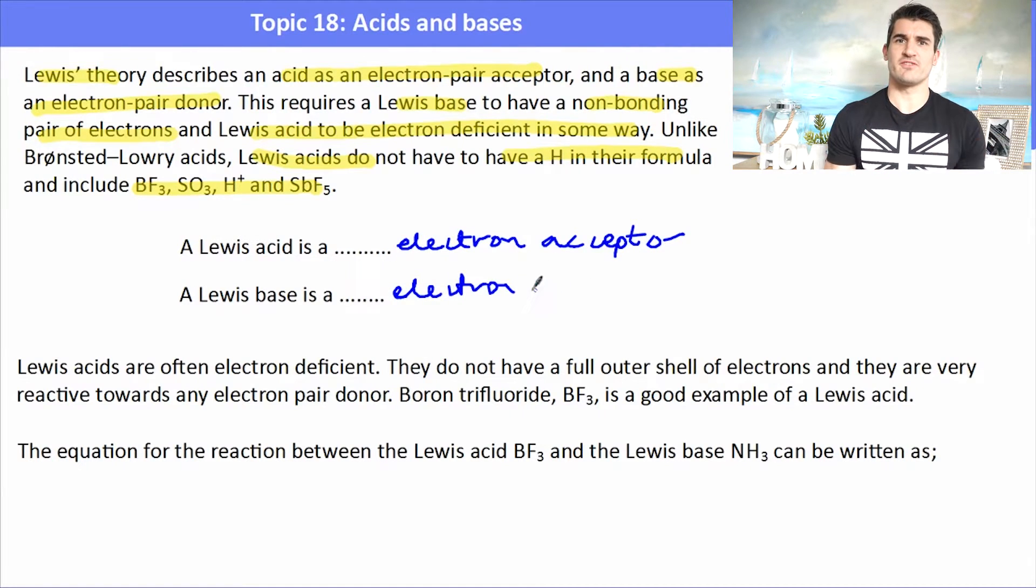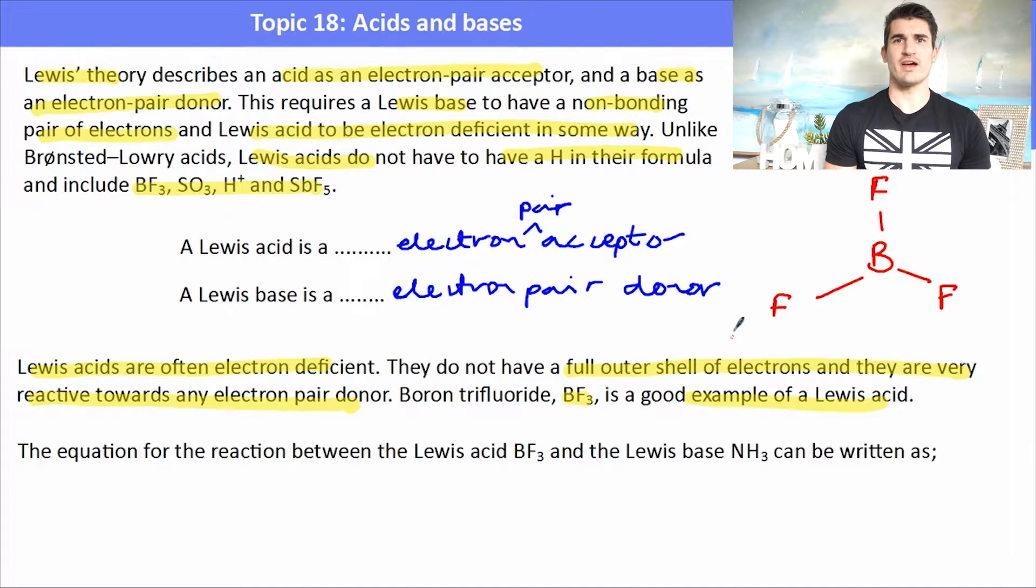So Lewis acids are often electron deficient. That is, they don't have a full outer shell of electrons and they're very reactive towards any electron pair donor. Boron trifluoride, for example, is a good example of a Lewis acid. Now why would that be a Lewis acid? Well, if we draw the structure it has a trigonal planar structure with boron having three covalent bonds to three fluorine atoms. But boron is in the second period of the periodic table, so we can have eight electrons in the outer shell. In that arrangement it only has six, so it is in fact electron deficient. It does not have a full octet.